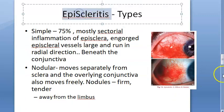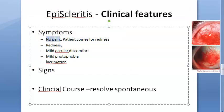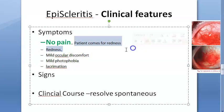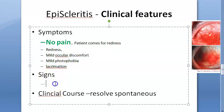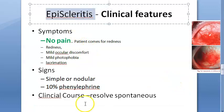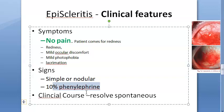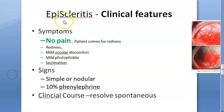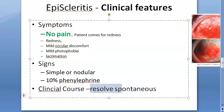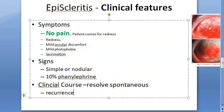This is a very important topic for exams. The main clinical feature to remember is no pain — the patient has absolutely no pain. The cause is idiopathic and no treatment is needed as it resolves itself. The patient usually comes for redness. There will be mild ocular discomfort and mild photophobia — everything is mild. Signs include simple or nodular presentation. The 10% phenylephrine test causes blanching because episcleritis is more superficial. If the eye becomes white after phenylephrine, it is episcleritis and not scleritis. Scleritis is very painful; episcleritis is not. The clinical course is spontaneous resolution.